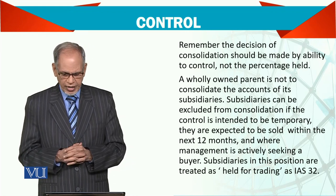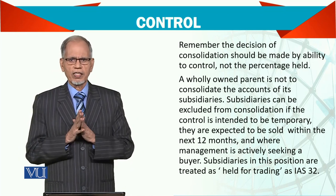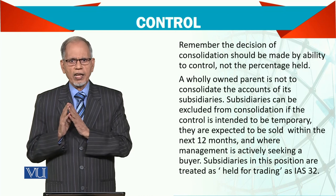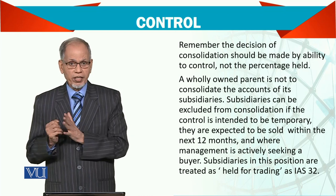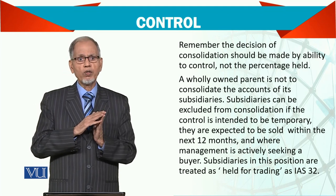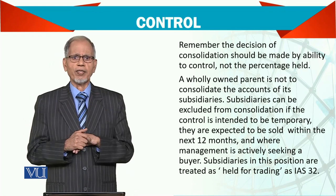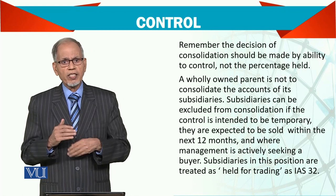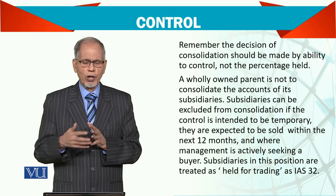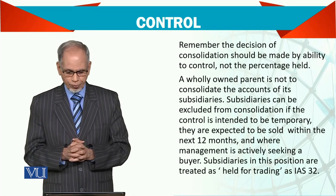Subsidiaries classified as held for trading under IAS 32: if you no longer have control, then that investment becomes held for trading. If the share falls below 20%, it is held for trading. But if your shareholding remains between 20% and 50%, then it becomes an associated company, and being an associated company, you still need to include it in consolidated accounts — not fully consolidated, but through a simple calculation which I will explain further. Thank you very much.